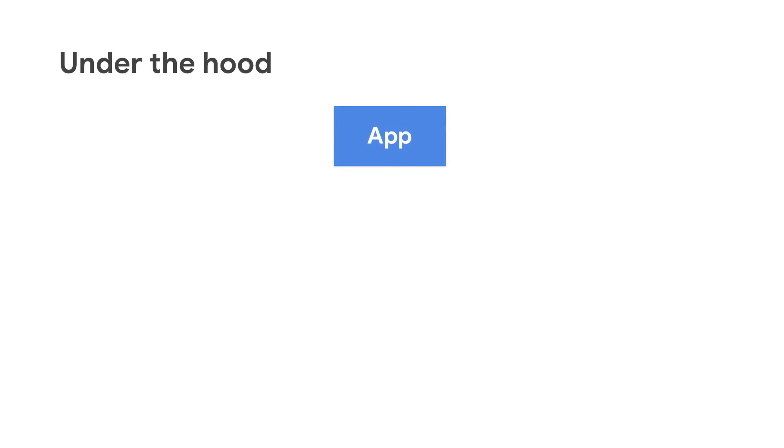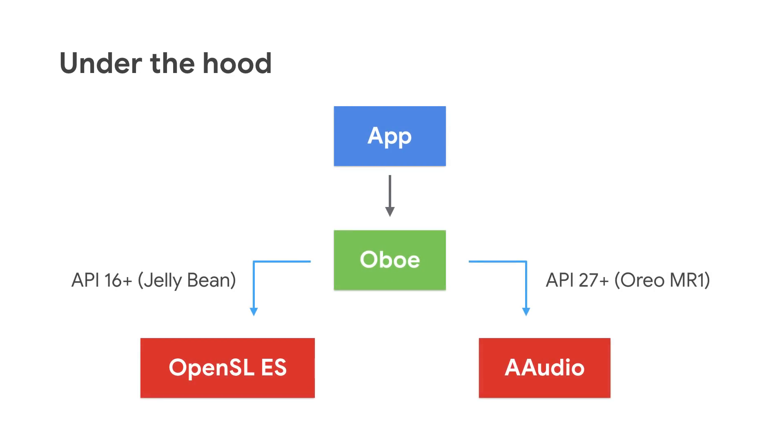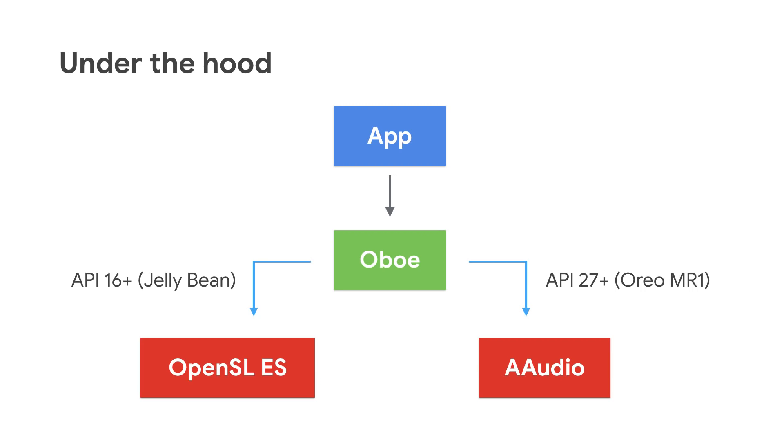Under the hood, it uses AAudio on API 27 and above, falling back to OpenSL ES on older API levels. This way, Oboe provides a single, easy-to-use API which takes advantage of the new features and better performance in AAudio, while still providing backward compatibility with older devices.